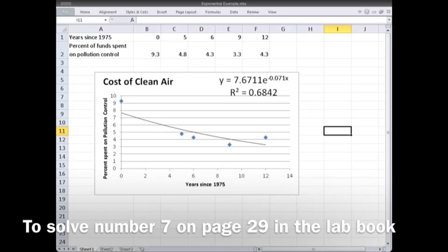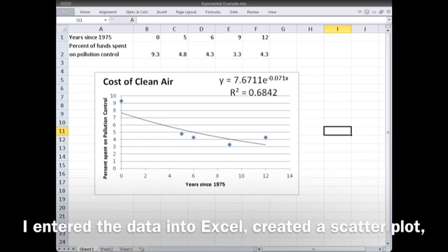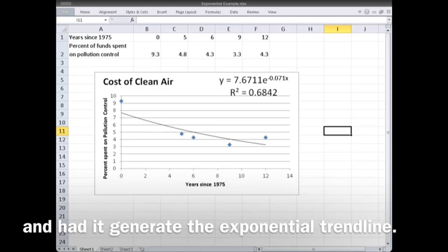To solve number 7 on page 29 in the lab book, I entered the data into Excel, created a scatterplot, and had it generate the exponential trend line.